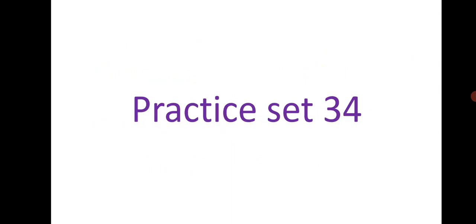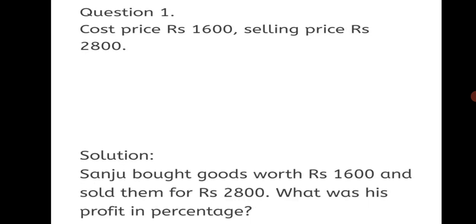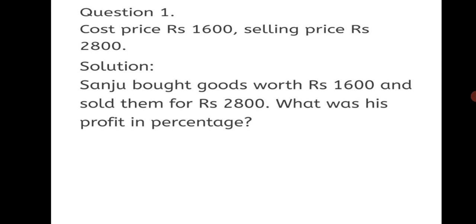Question 1: Cost price is given and selling price is given. We will have to frame the word problem. So let us write a solution. Sanju bought goods worth Rs.1600 and sold them for Rs.2800. What was his profit in percentage? This way we have framed the question itself in the solution first.